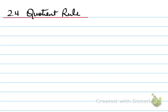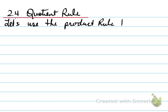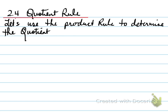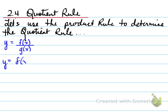2.4 Quotient Rule. Let's look at the quotient rule and how to calculate it. We'll use the product rule to determine the quotient rule. This is done by taking a quotient and converting it to a product by using the negative 1 exponent.